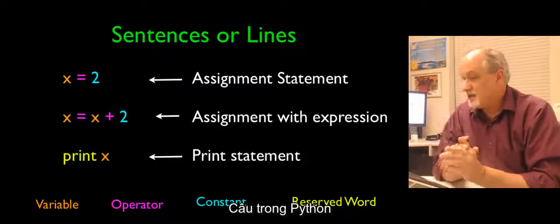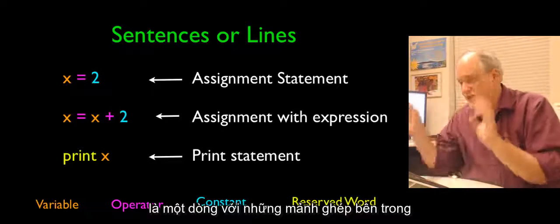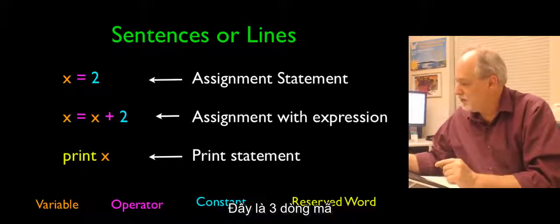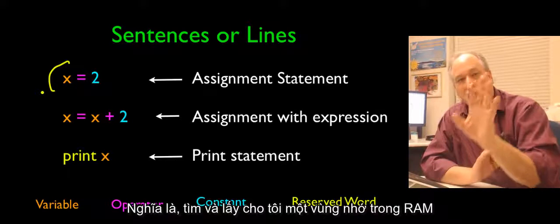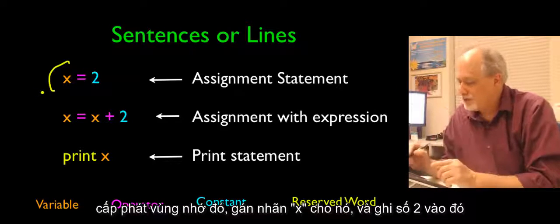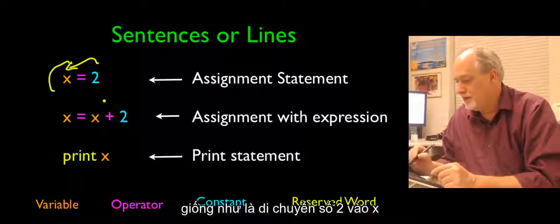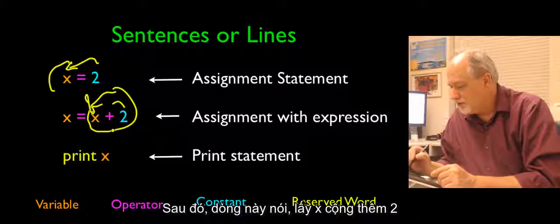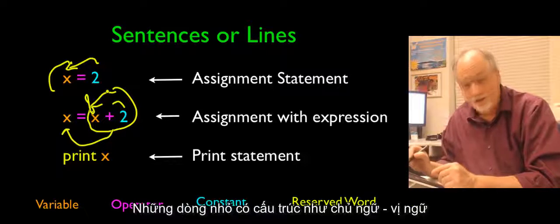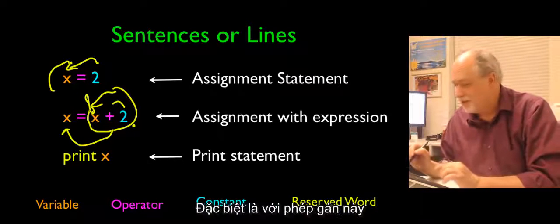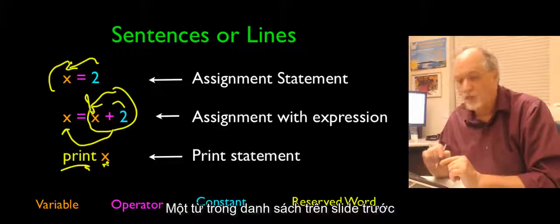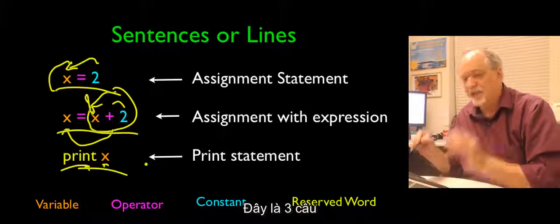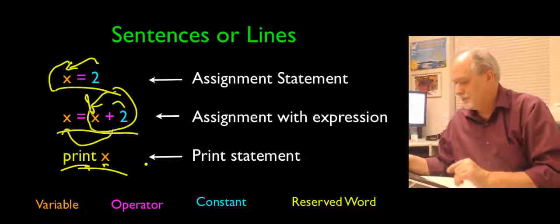Sentences in Python are like a line that has pieces to them. Here are three pieces of code: 'x equals 2' says find me a piece of memory in your RAM, allocate it, label it x, and stick 2 in it. Then 'x equals x plus 2' says go get x, add 2 to it, and put the sum back into x. And then 'print' is a reserved word — go read that variable. These are like three sentences in our new little language.